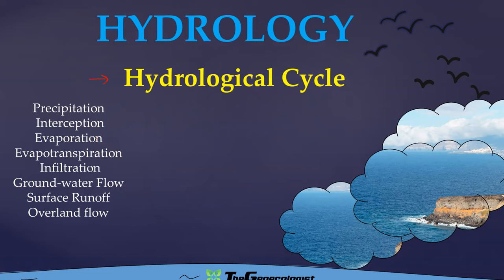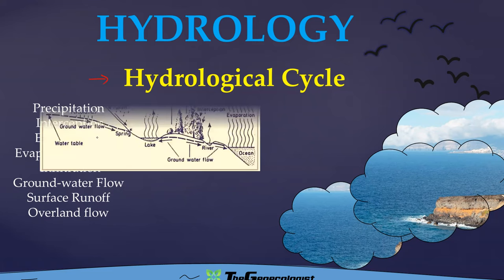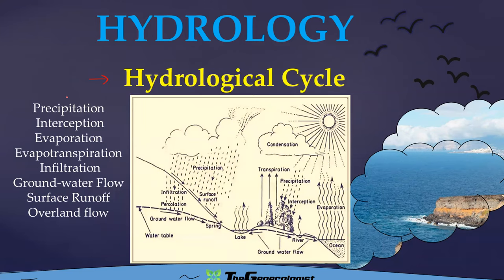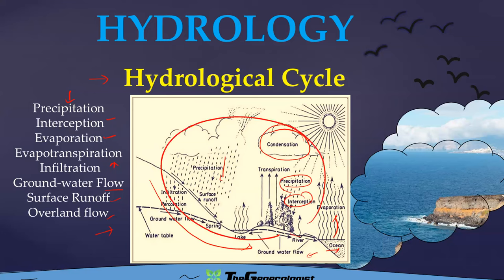Let's understand the hydrological cycle in more depth and detail. The topics we are going to discuss include precipitation, interception, evaporation, evapotranspiration, infiltration, groundwater flow, surface runoff, and overland flow. These are very important to understand how the hydrological cycle operates. The entire cycle — from groundwater flow and river flow to precipitation, interception, evaporation, condensation, runoff, and water bodies — operates in nature through these processes.